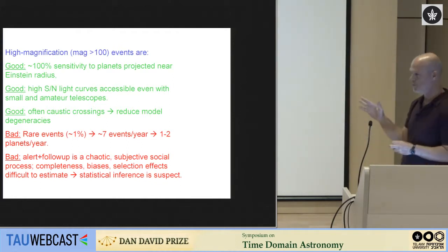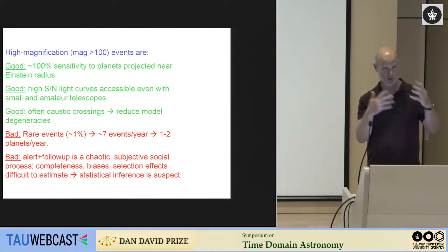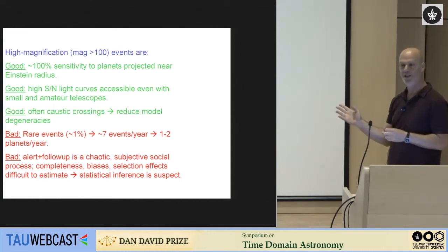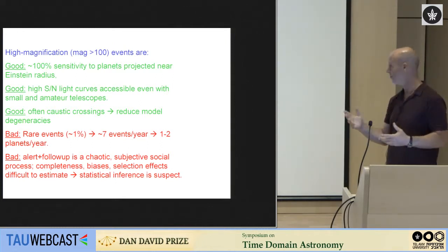And the good thing, the idea was then that once you identify such an event, then you alert a global network of small telescopes. As it turned out, many of them are even amateur telescopes that follow up this event to look for the anomalies, the lensing anomalies that will indicate there's an extrasolar planet around the lens star. Now why was this a good idea? High magnification events are good because when you have this kind of passage, this very low impact parameter passage near your lens star, you're basically lensing your background star into an almost complete Einstein ring.